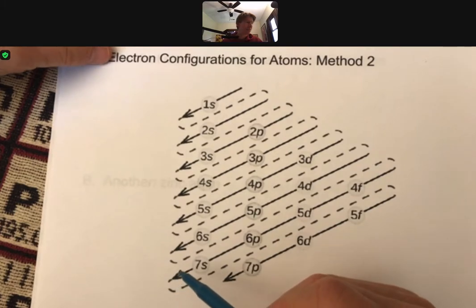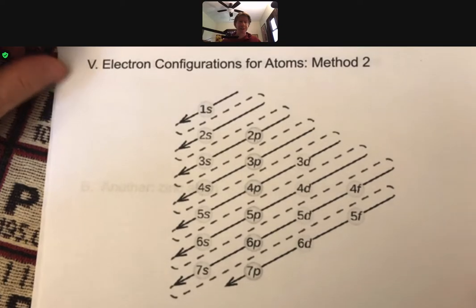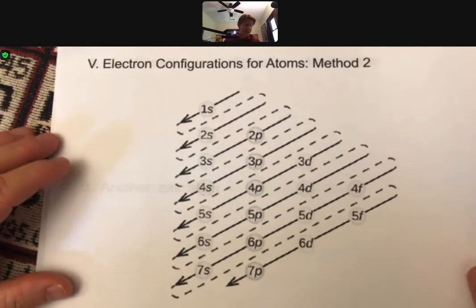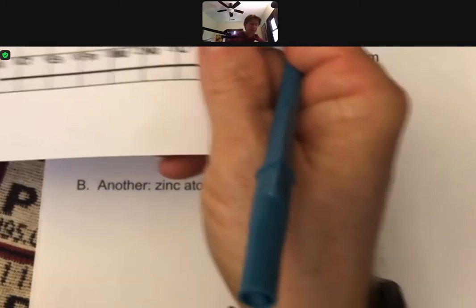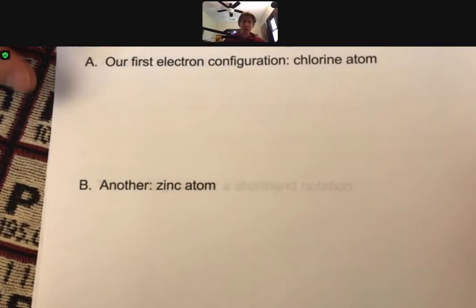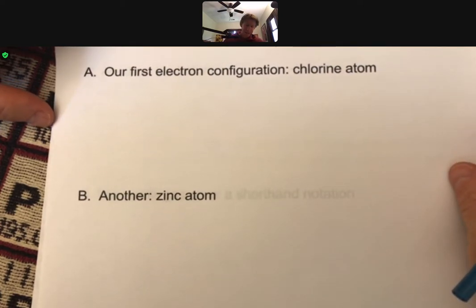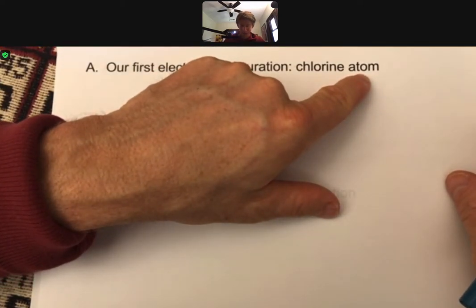So I would say more students end up using the shape of the periodic table, especially if they go on. But as everything in this course, you have to think about what's the best way or the easiest way for you to do it and to get the right answer. And we'll reference both of them. Both of them give the same answers. And now let's do our first electron configuration. It's going to be for chlorine and for the chlorine atom. And we will only do electron configurations for atoms in this course.